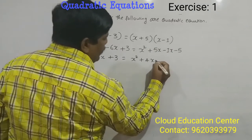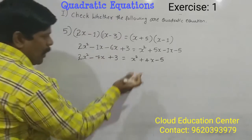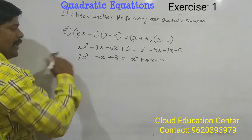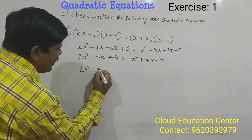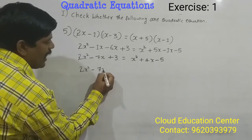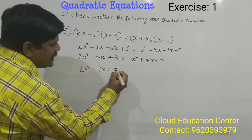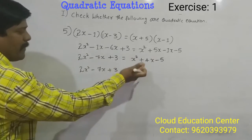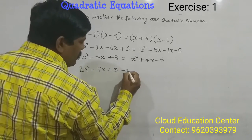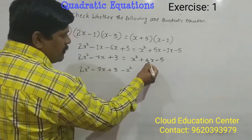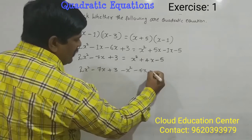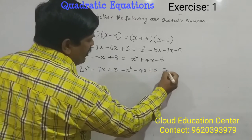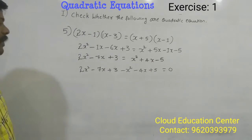And it is minus 5. Now bring this RHS to the LHS. 2x square minus 7x plus 3 is there. When it comes from RHS to the LHS, the plus x square becomes minus x square, plus 4x becomes minus 4x, minus 5 becomes plus 5, then it becomes 0.